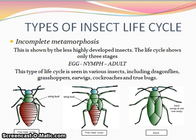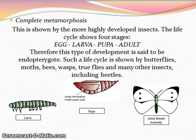Complete metamorphosis is shown by the more highly developed insects. The life cycle shows four stages: egg, larva, pupa, and adult. The larva, or caterpillar, is the growth phase. The pupa is a stage of internal reorganization, previously called the resting stage.